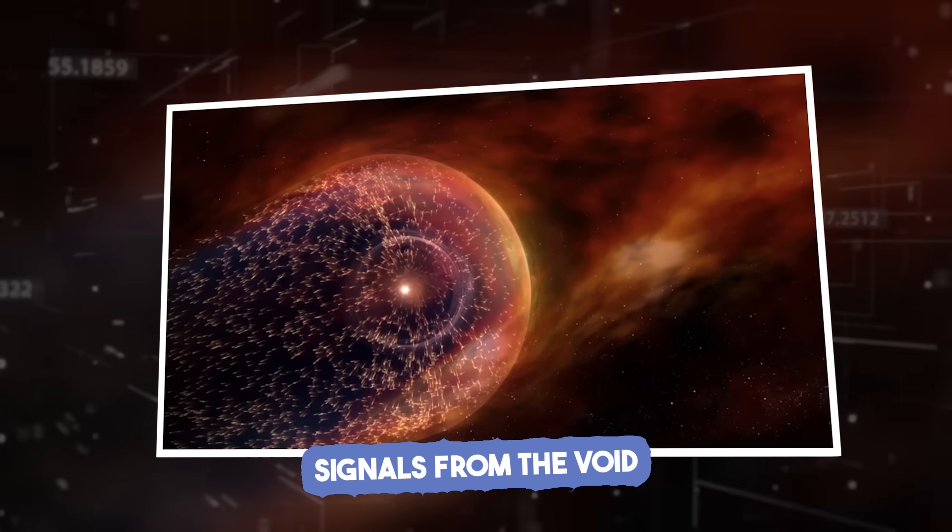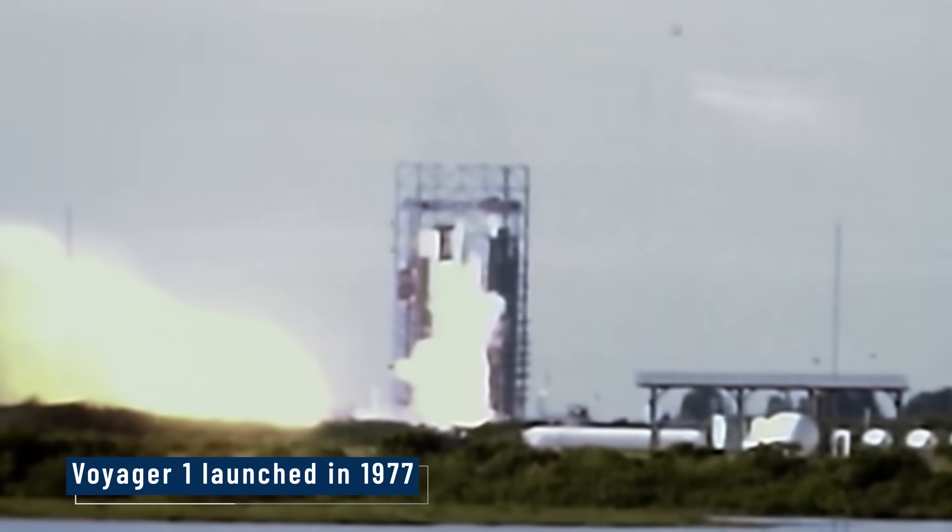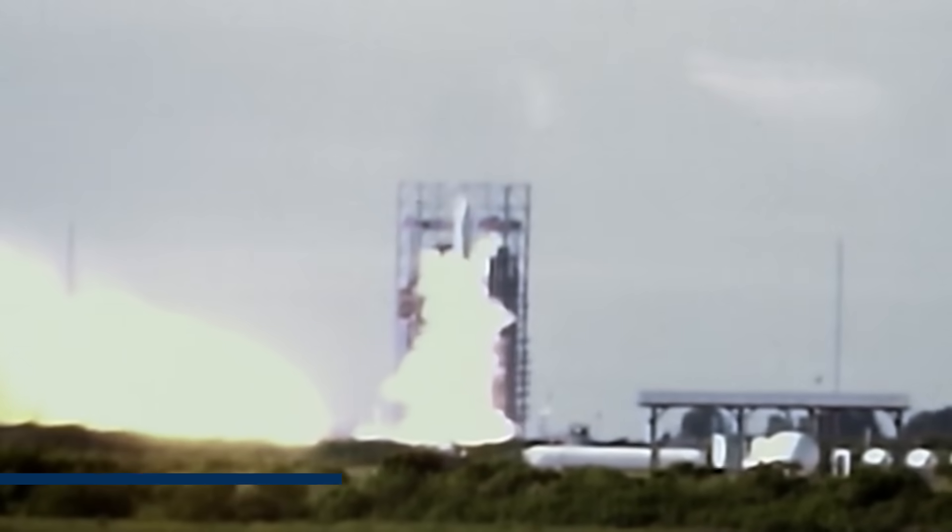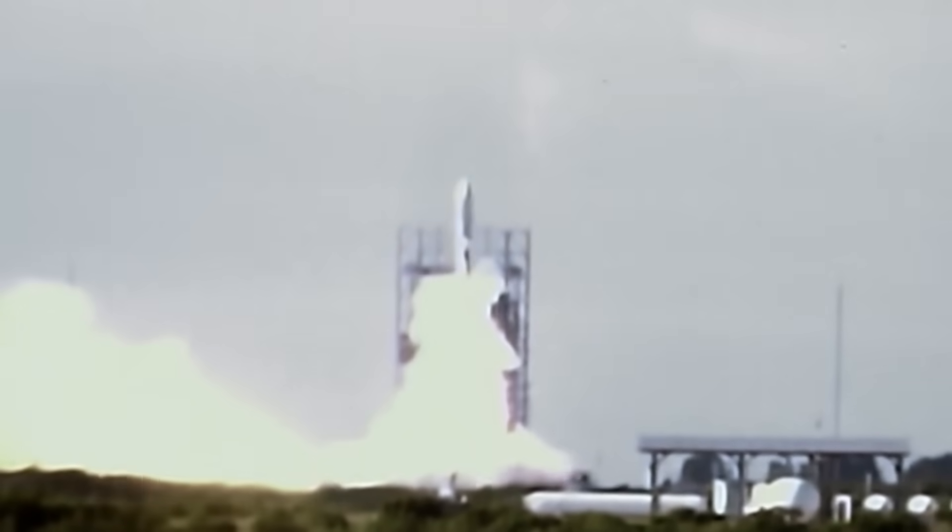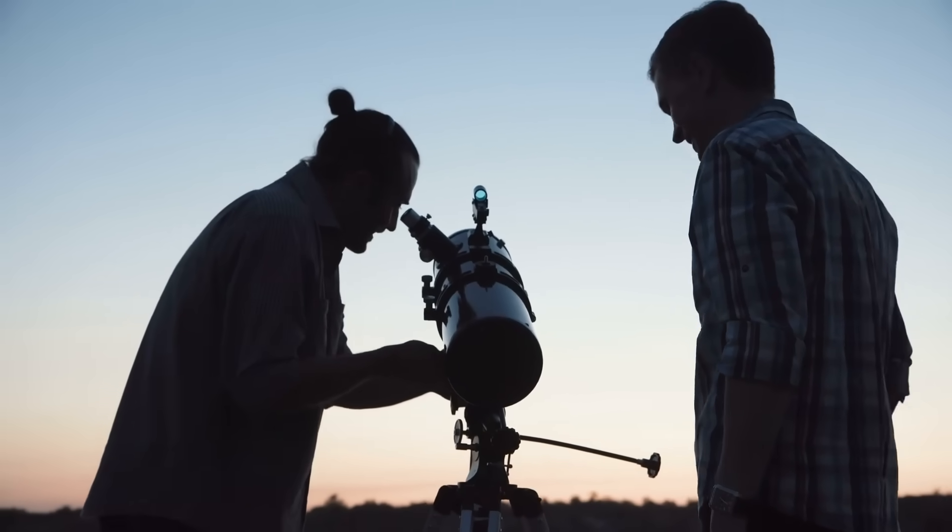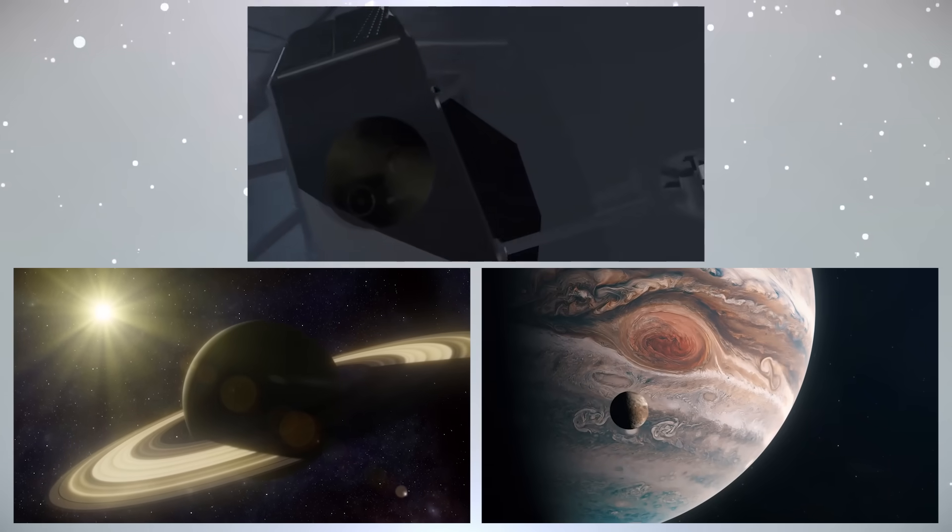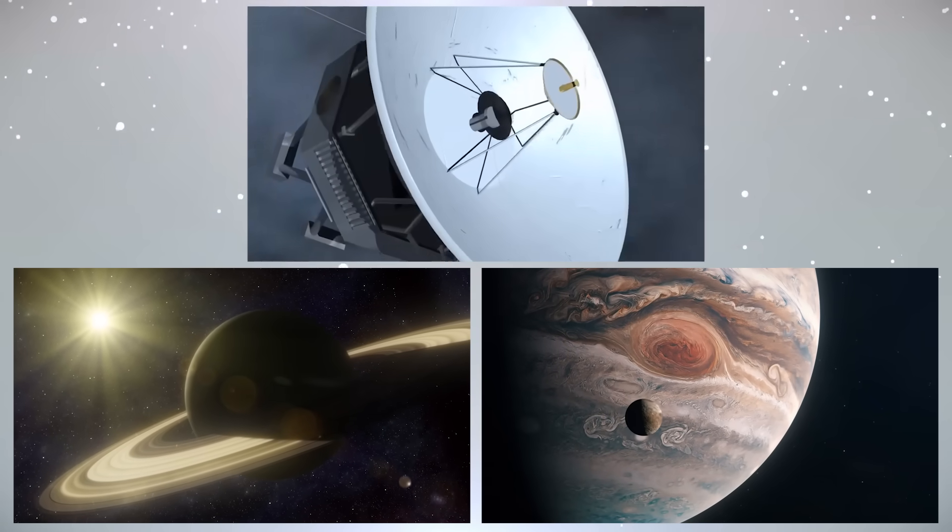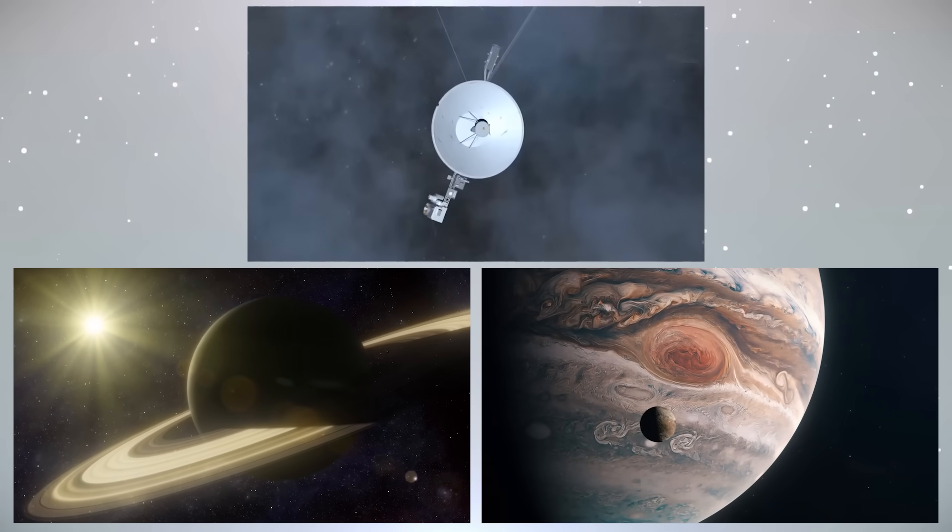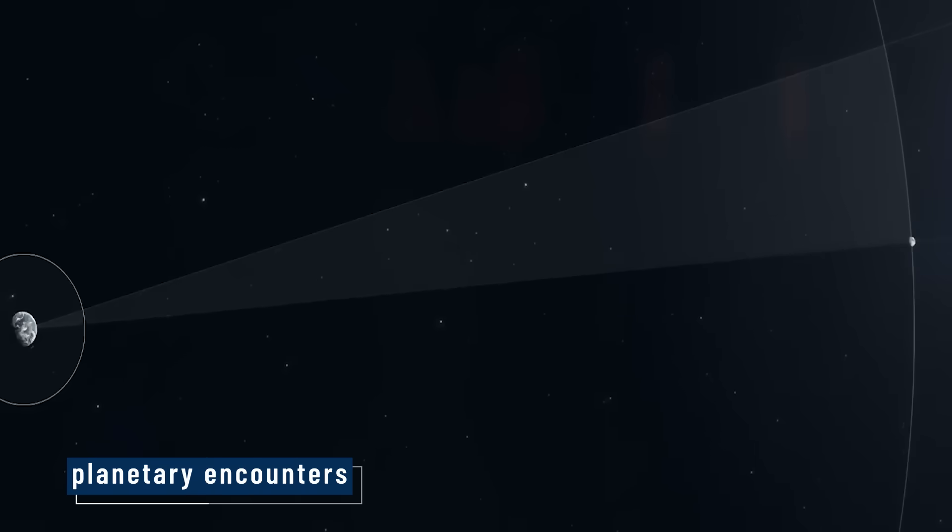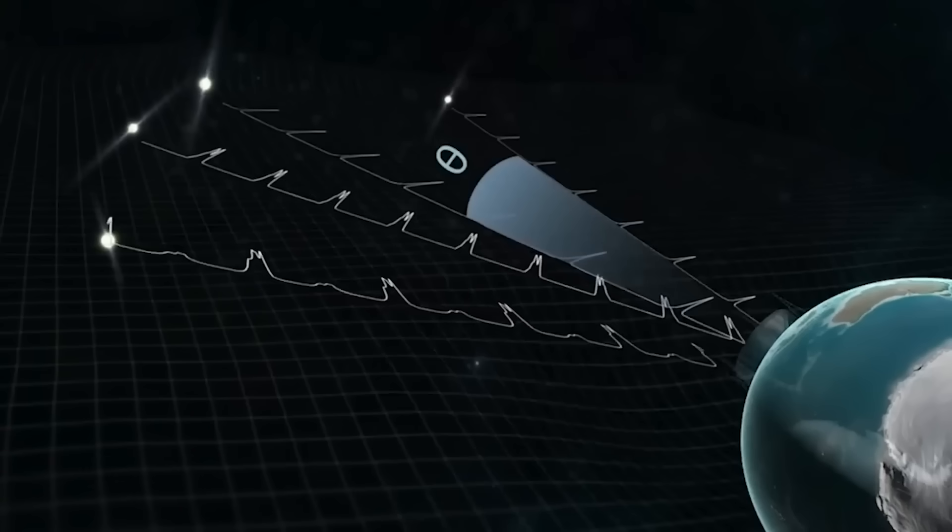Voyager 1's journey into interstellar space. Voyager 1 launched in 1977 with a mission that few could have imagined would last so long or take humanity so far. Initially designed to explore the giant planets Jupiter and Saturn, Voyager 1's journey quickly became something far greater. After completing its planetary encounters, it didn't stop.